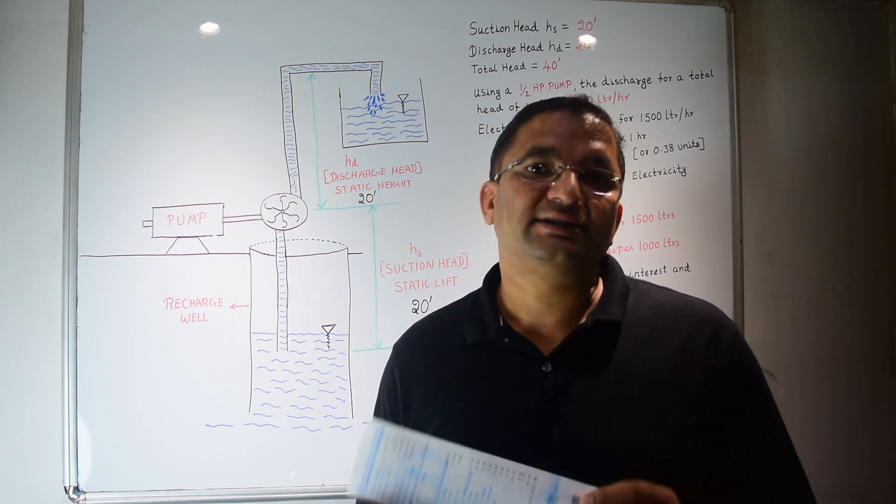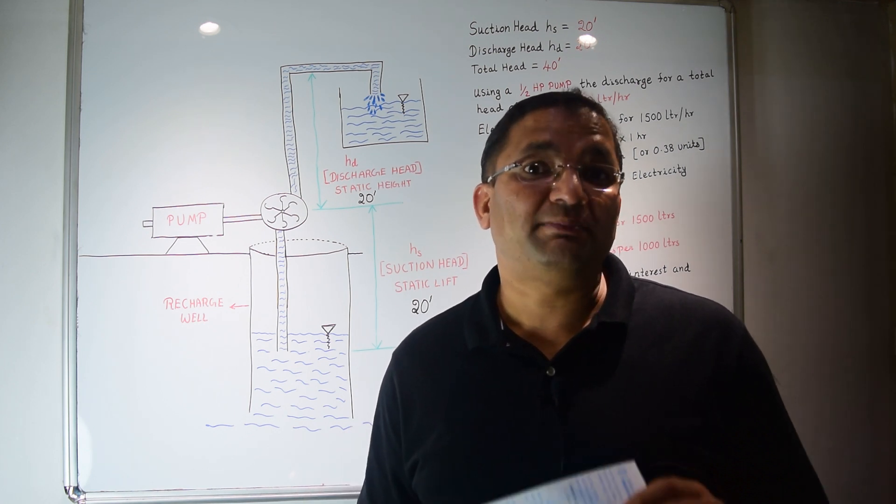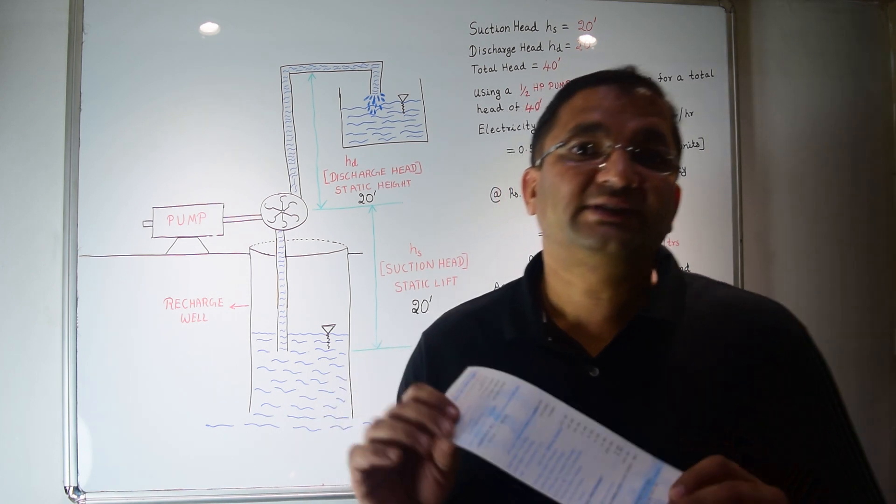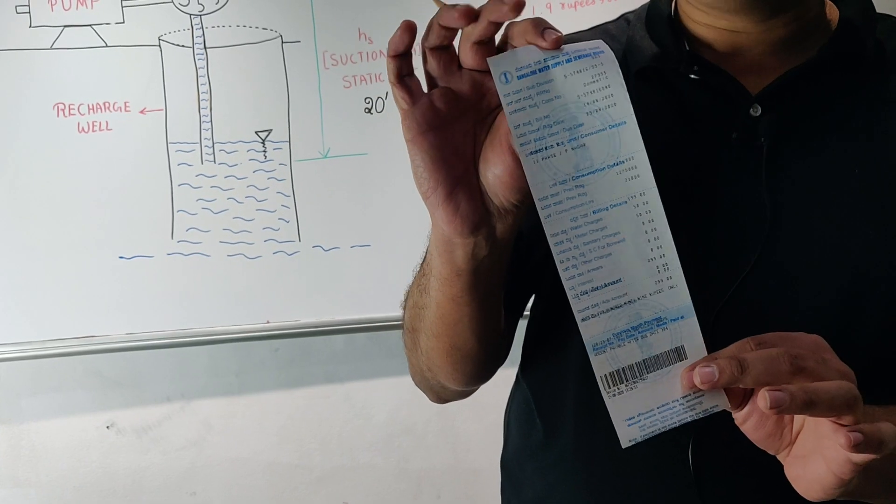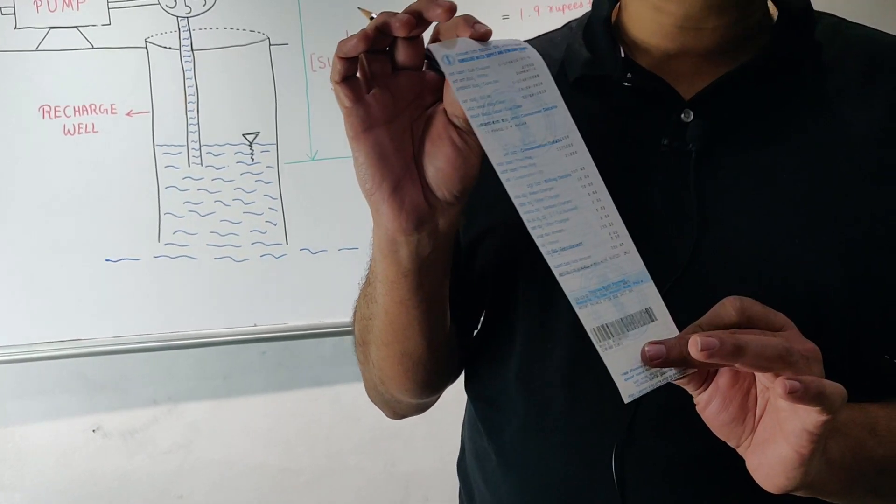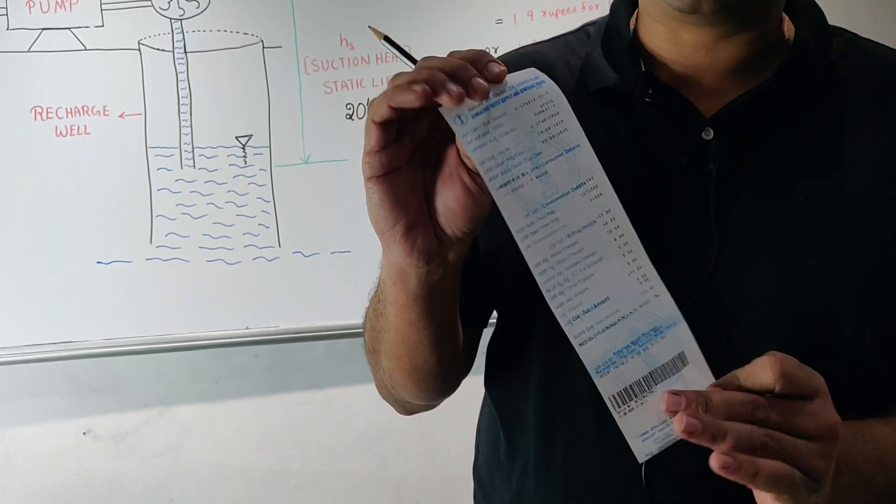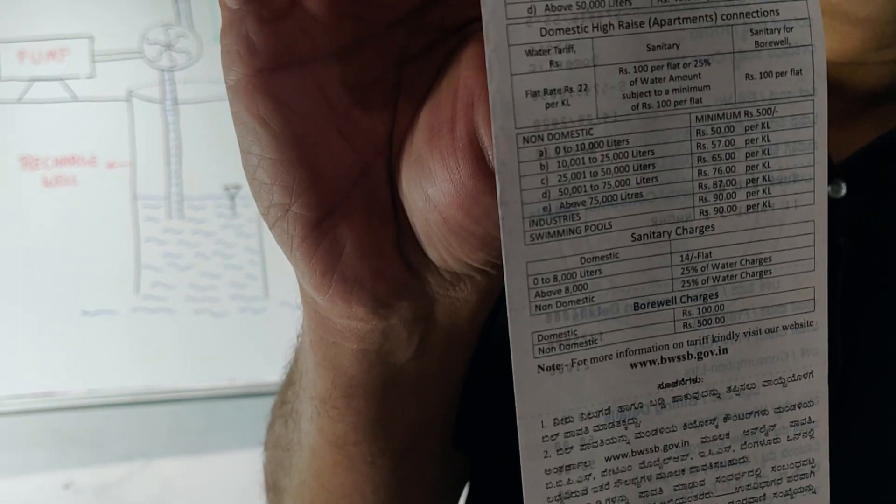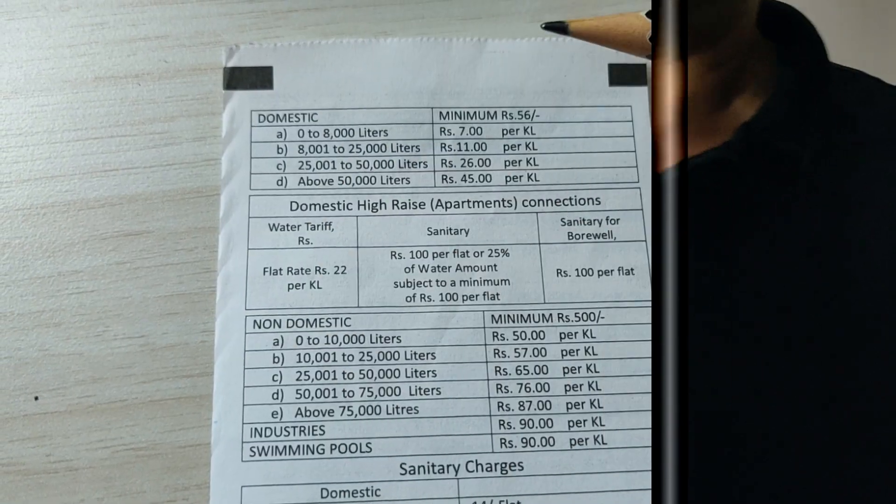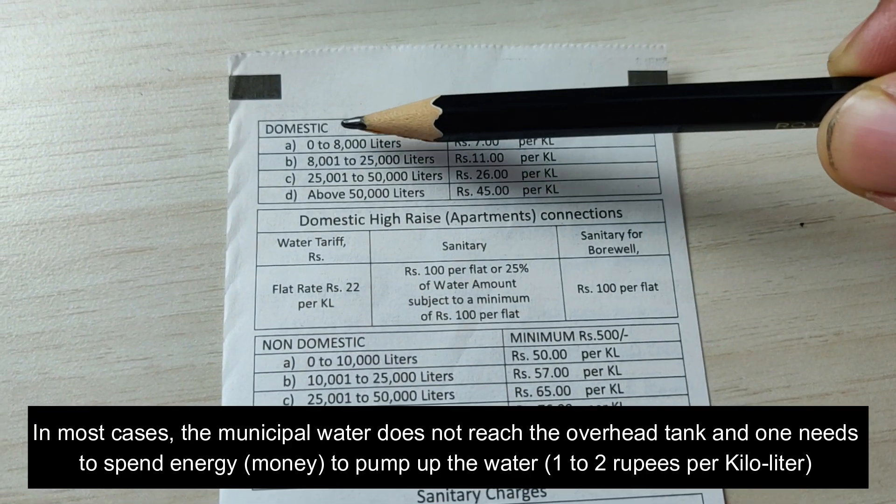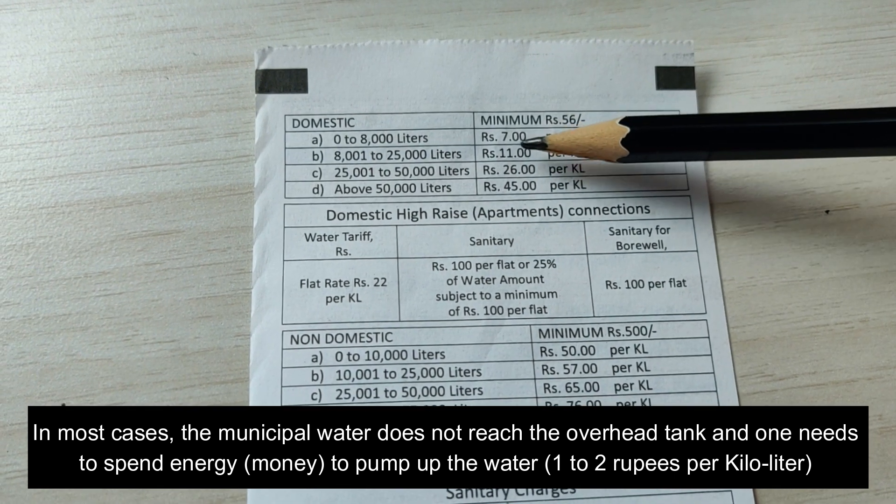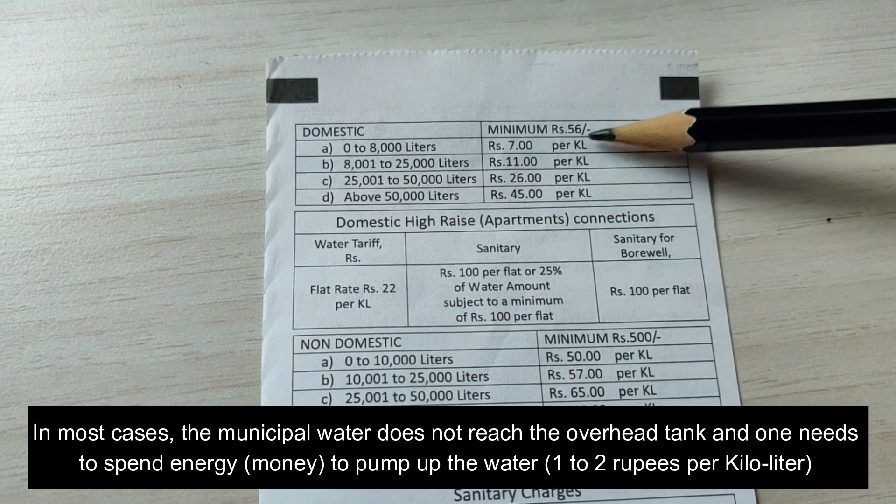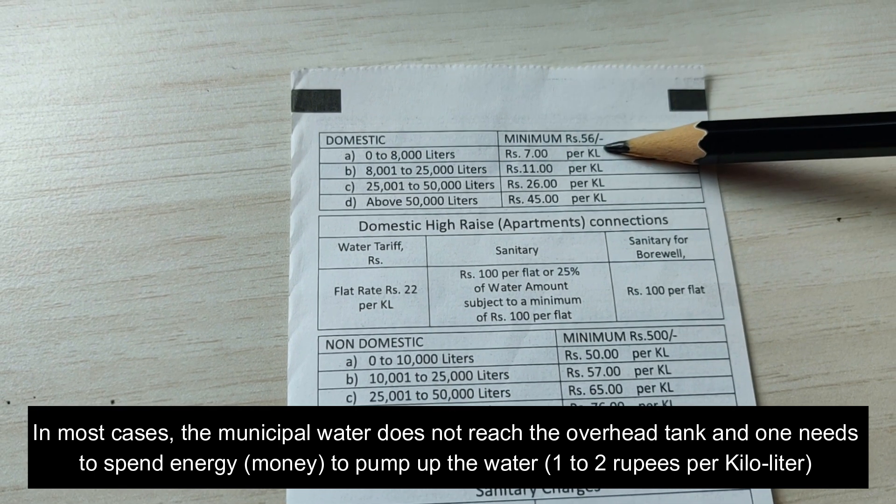Now compare this with the cost of water as supplied by the water supply company in Bangalore. This is the bill given by BWSSB, that's the water supply company of Bangalore. And this is the cost of water as supplied by them. You can see here, even for the domestic segment, the cost of water starts at rupees 7 per kiloliter.